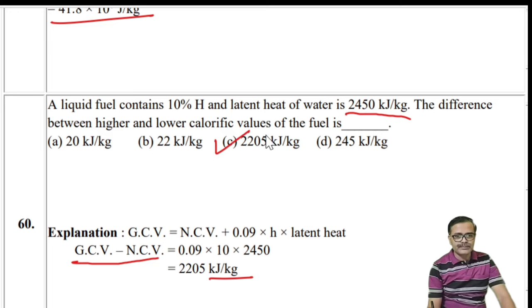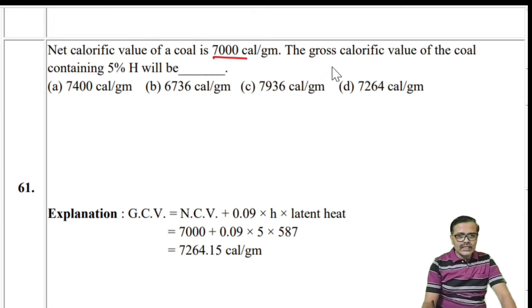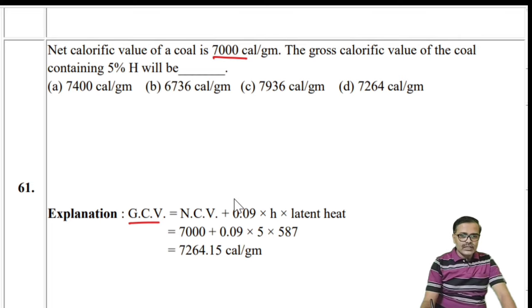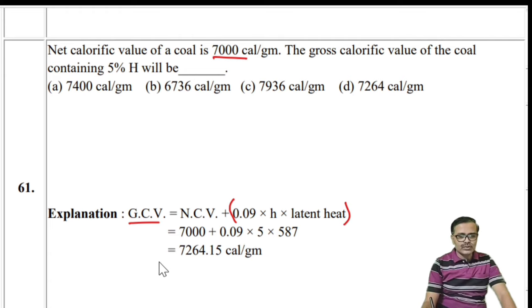Numerical: Net calorific value is 7000 cal/g with 5% hydrogen. GCV = NCV + 0.09 × H × 587 = 7000 + 0.09 × 5 × 587 = 7000 + 264.15 ≈ 7264 kcal/kg. The answer is the last option.